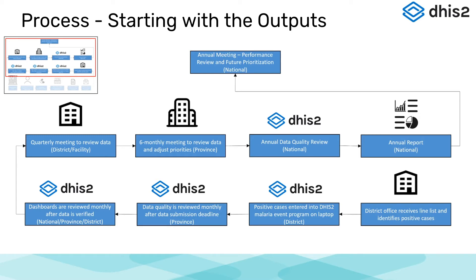If we refer back to our diagram, we can see that these processes are made more clear to us after working with our stakeholders and reviewing any relevant documentation they may have provided to us. Data are reviewed monthly, quarterly, six-monthly, and annually at various levels. We would also want to consider these regular work practices when reviewing the workflow.